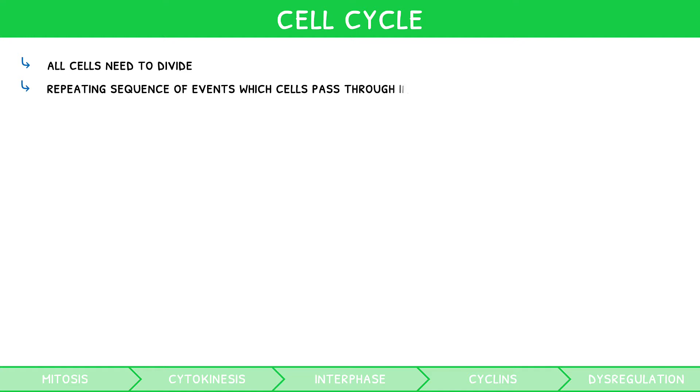As mentioned in our previous video, all cells need to divide. There are a repeating sequence of events which cells pass through in order to undergo this division. They are collectively known as the cell cycle, i.e. the sequence of events between one cell division and the next.